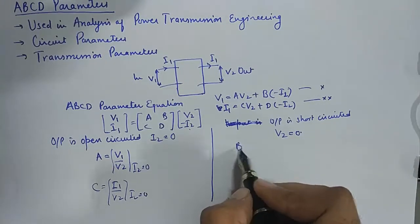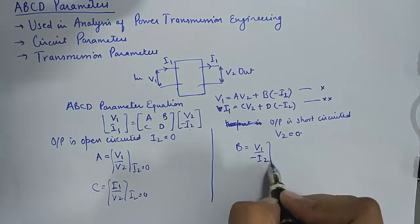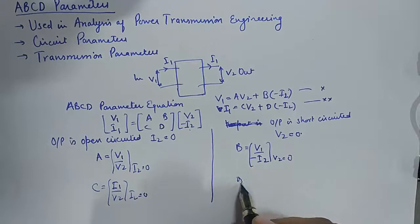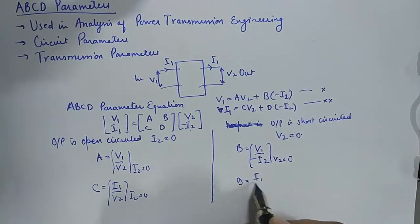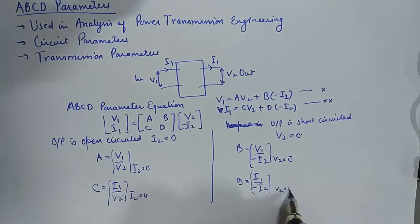Similarly, B gets the value V1 upon minus I2 when V2 is zero, and D gets the value I1 upon minus I2 when V2 is zero.